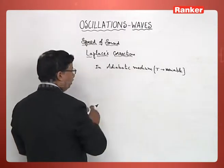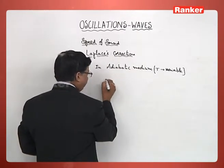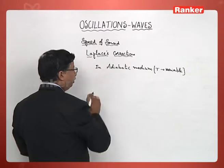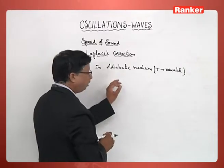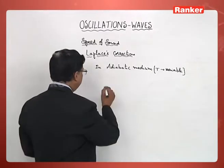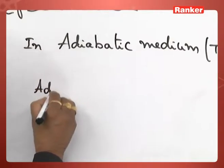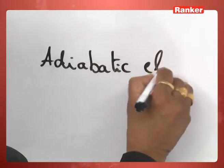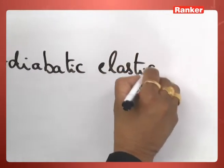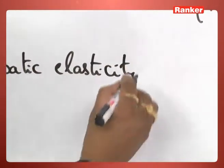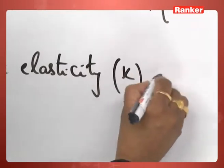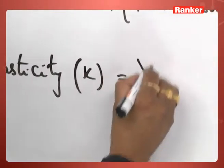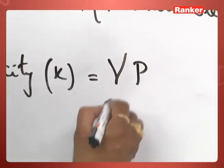Now, in an adiabatic medium, adiabatic elasticity is going to be gamma times the pressure. So what we can understand here: the adiabatic elasticity of that material medium, if I take it as K, that is equivalent to gamma times P.